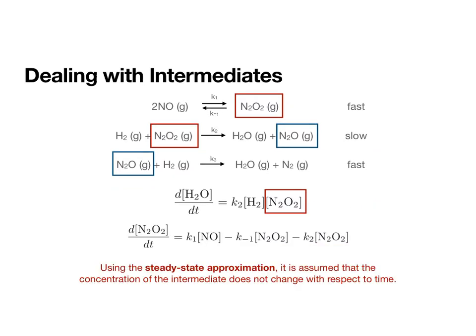One way to do this is that we can set up the expression for how the rate of the intermediate changes with time. The intermediate is created using K1, the forward reaction of the equilibrium step. It is used up by the reverse reaction of the equilibrium step, and it is used up in the rate determining step.